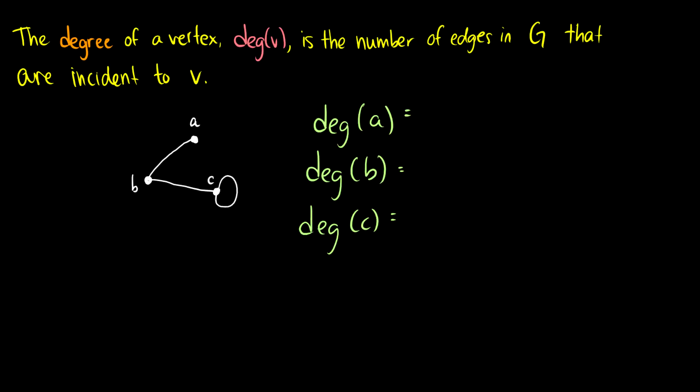So what is a degree? Every vertex has a degree, which we abbreviate as deg with our vertex as its argument, and that's the number of edges in the graph that are incident to that vertex.